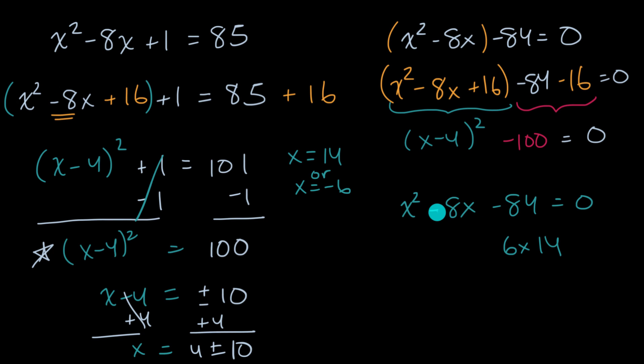One of them has to be negative. And since when we take the sum of the two numbers, we get a negative number, that means the larger one is negative. So let's see, six times negative 14 is negative 84. Six plus negative 14 is indeed equal to negative eight. So we can factor this as x plus six times